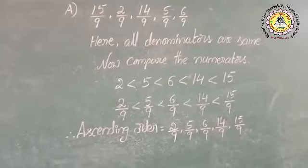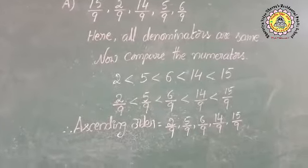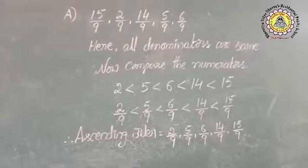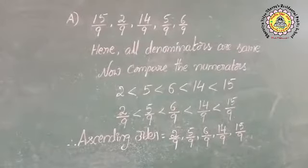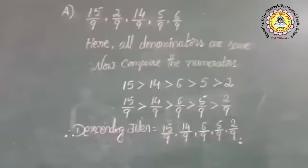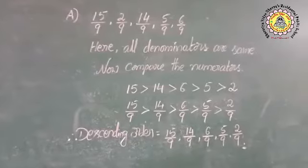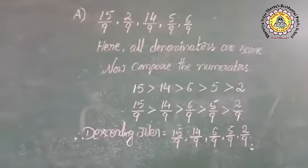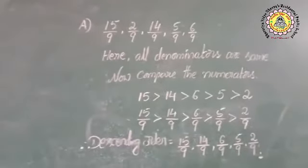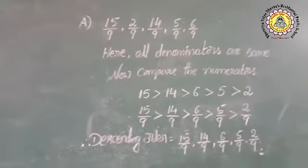This order starts from the smallest fraction to the biggest fraction. Now, let us know how to write the descending order for the same fractions.